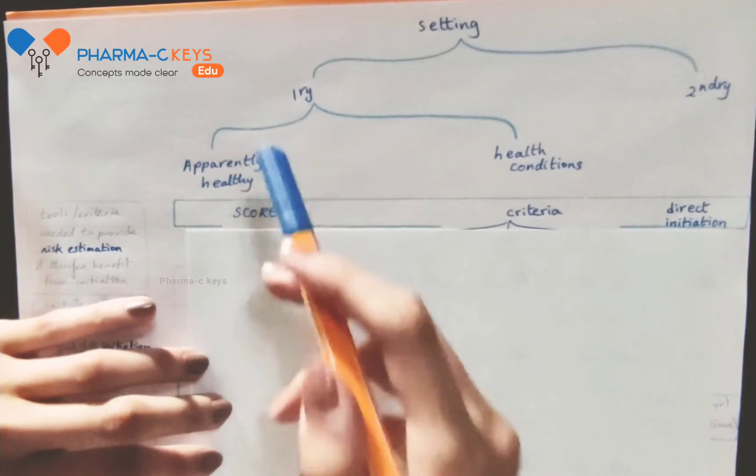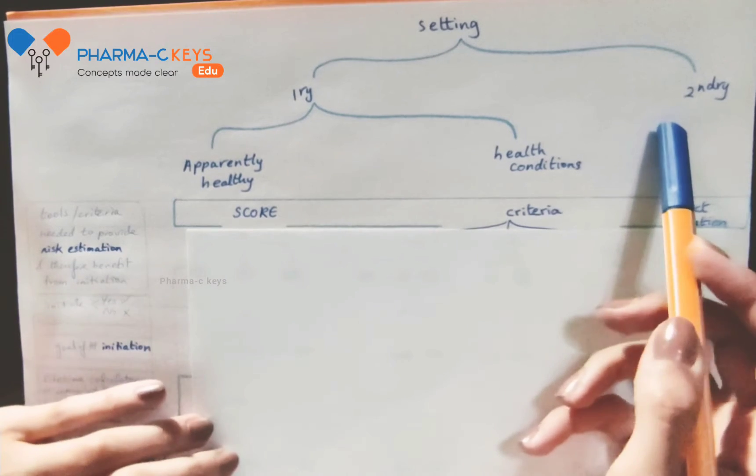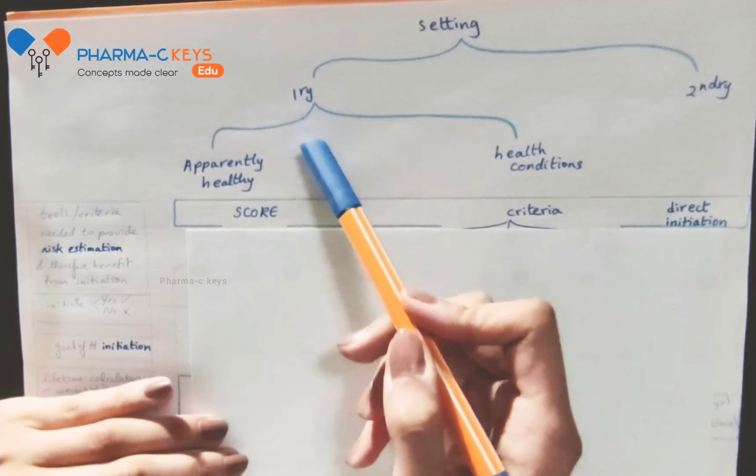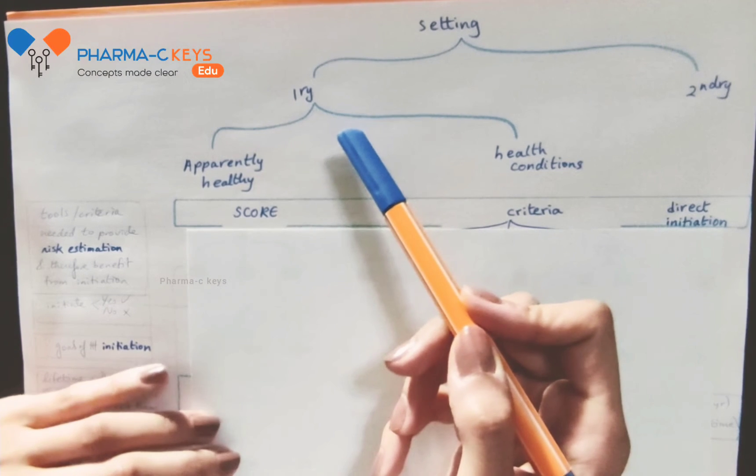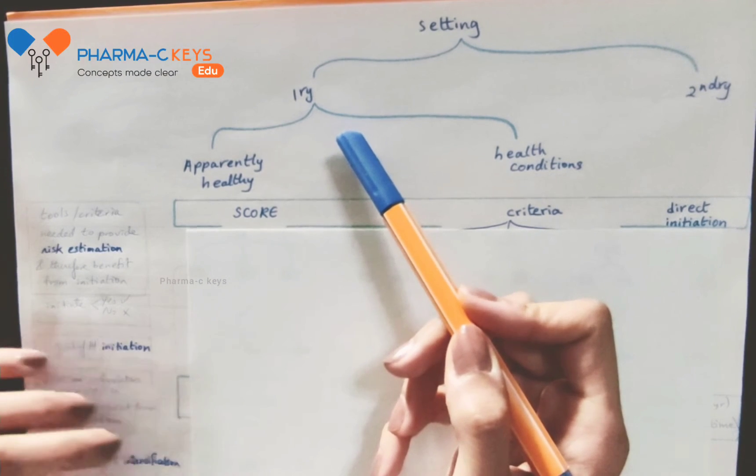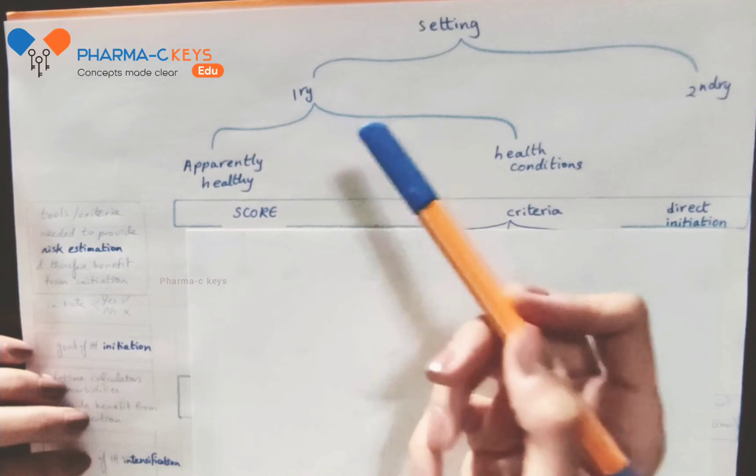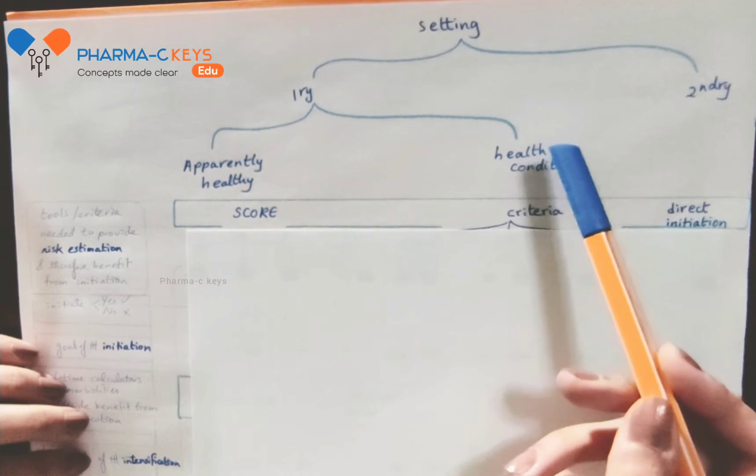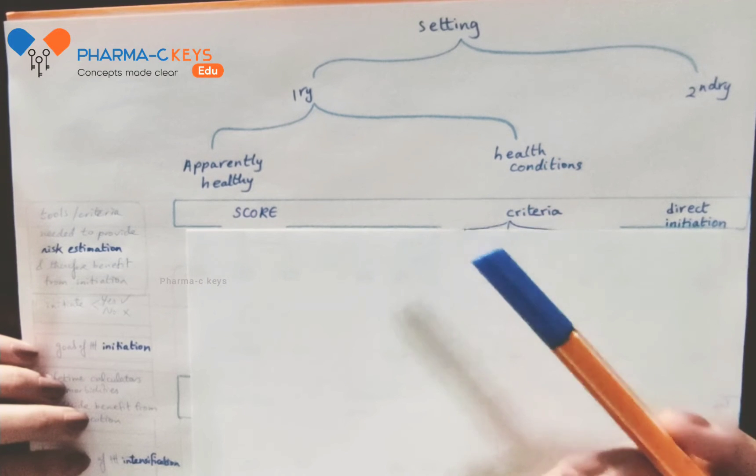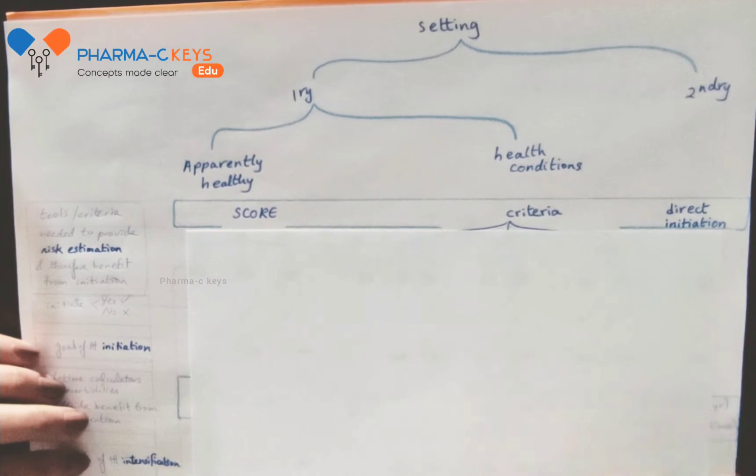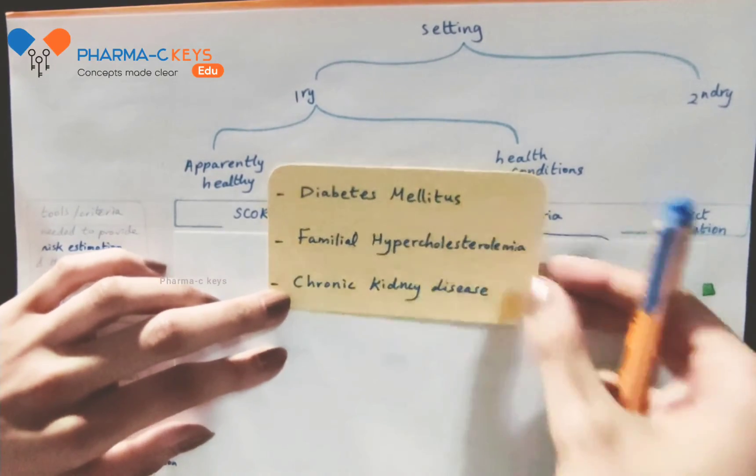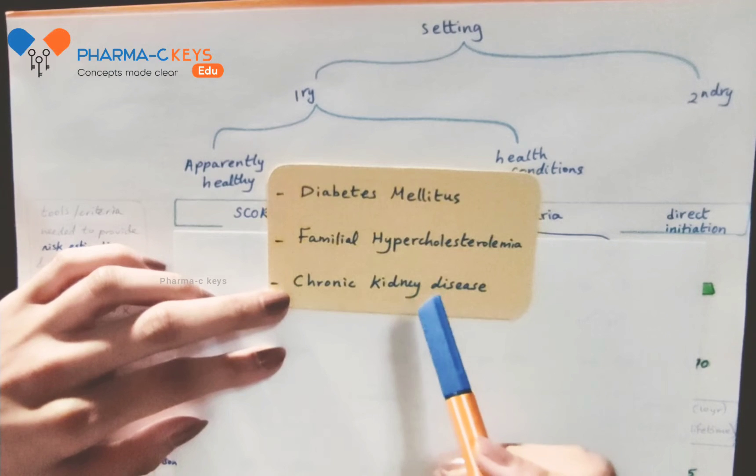Now we will speak about each setting, starting with the primary prevention. Primary prevention means persons without atherosclerotic cardiovascular disease. These persons are either healthy or non-healthy individuals, meaning that they suffer diseases other than cardiovascular diseases. Yet, these diseases put the patient at a certain cardiovascular risk.